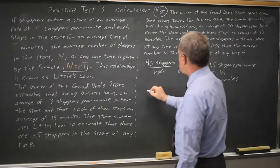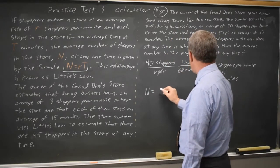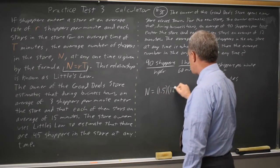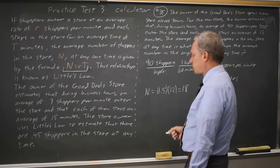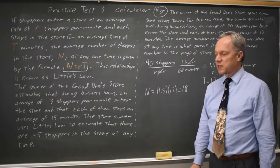Little's Law says N, the number of shoppers in the store, equals RT, 1.5 shoppers per minute times 12 minutes, equals 18 shoppers. The new store averages 18 shoppers in the store at any one time.